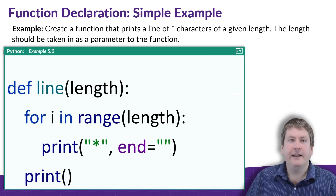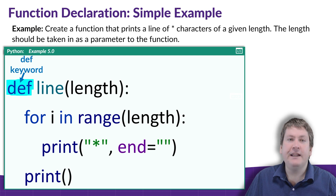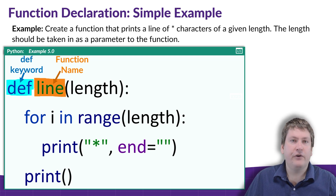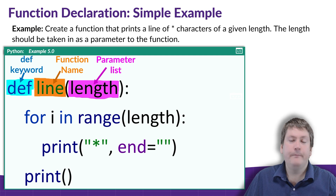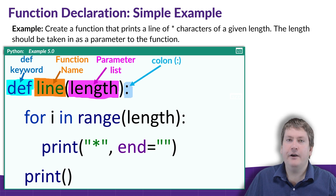Let's take a closer look and break down this function header. First, we have the define keyword — this is always the same for any function definition, starting with the characters D, E, F, and then a space. Next is the function's name, which is how we refer to this function in our code. It's important that this name follows the same rules for naming variables, and the recommendation is to use snake case. Next we have a list of parameters — in this case, there's only one parameter, length. If we had additional parameters, we'd separate them with commas. These represent the different inputs going into our function, and we can use them like variables inside the function. We end the function header with a colon character.